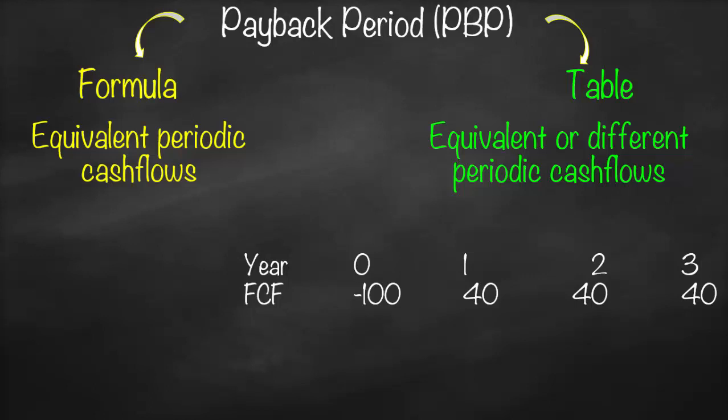We then calculate the cumulative free cash flow by adding them up. In year zero we have negative 100. In year one: negative 100 plus 40 gives cumulative free cash flow of negative 60. In year two: negative 60 plus 40 gives negative 20. In year three: negative 20 plus 40 gives positive 20 million.